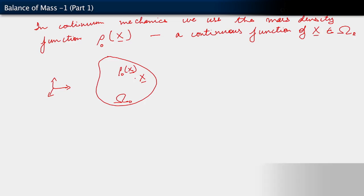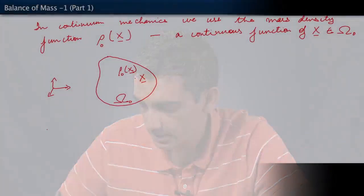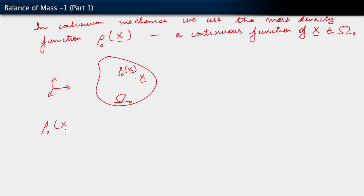Now, the idea is that our mass density function remains continuous regardless of the severity of the deformation. We know we can actually talk about the severity of the deformation by looking at our strain measures, which we've defined, and we've also defined strain rate measures. We may talk about how severe or extreme the deformation is. Regardless of how bad the deformation is, our mass density function rho zero of X remains continuous regardless of the deformation.